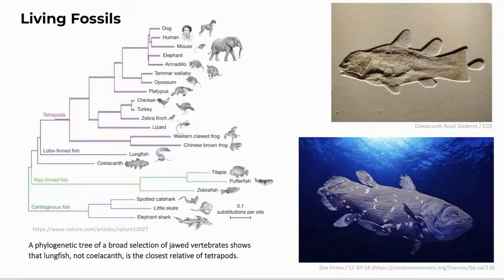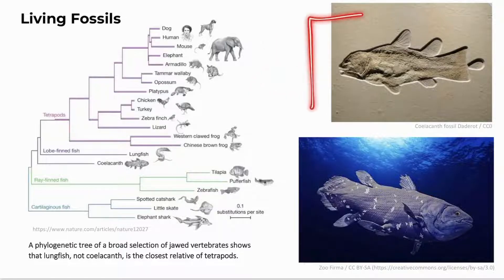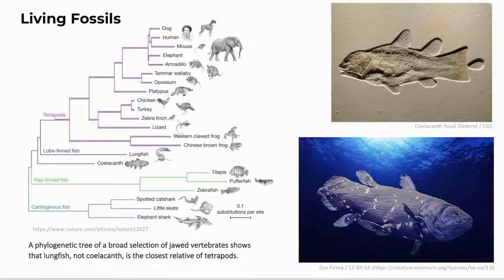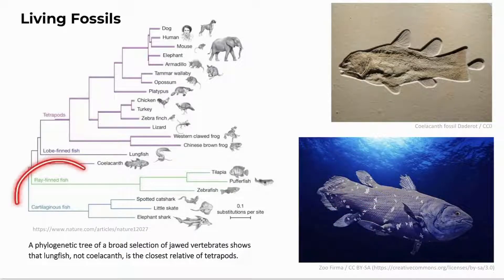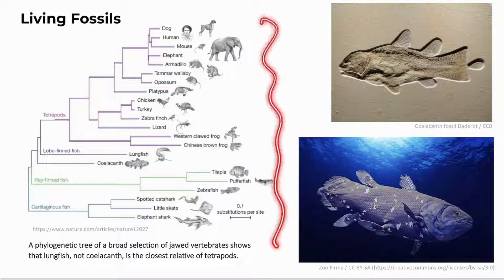Living fossils are species found in the fossil record, thought extinct for hundreds of millions of years, and then discovered alive in modern times, relatively unchanged. Examples include corals, crocodiles, horseshoe crabs, cockroaches, and the coelacanth. The coelacanth is a lobe-finned fish always thought to be the first animal linking water-living animals to land-living tetrapods, but further studies shown in a phylogenetic tree revealed the lungfish as a more recent relative.